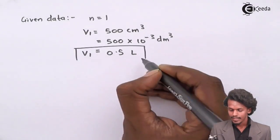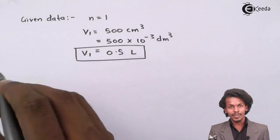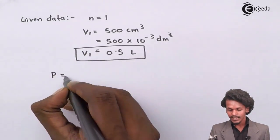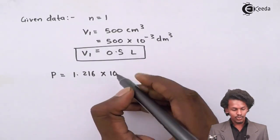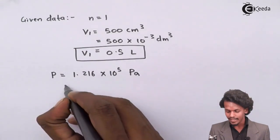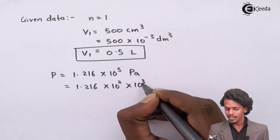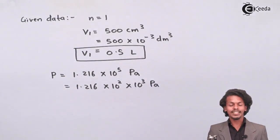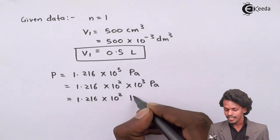They have said that the constant pressure is being maintained at 1.216×10⁵ Pascal. This Pascal can be converted or written as 1.216×10²×10³ Pascal, so that this could be written in kilopascal as 1.216×10² kPa.